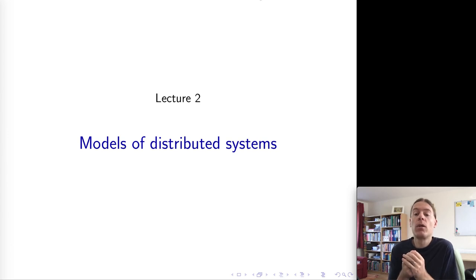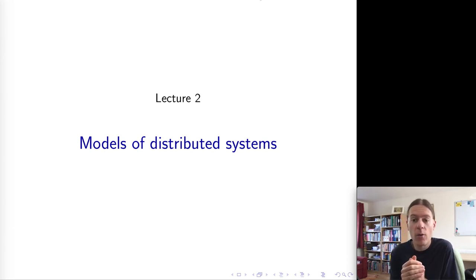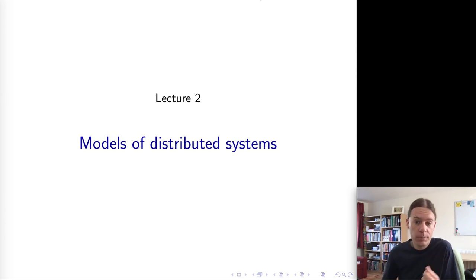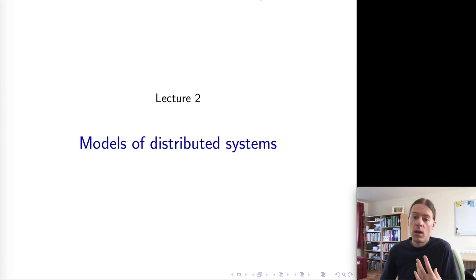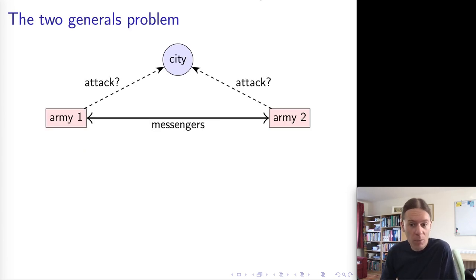A system model is very important because, as we discussed, things can go wrong in distributed systems. Nodes can crash, networks can fail, and so on, and we have to be precise about what failures we are assuming are possible and what failures we are assuming are not possible. We're going to start by looking at two classic thought experiments from distributed systems: the two generals problem and the Byzantine generals problem, and we're going to start now with the two generals problem.